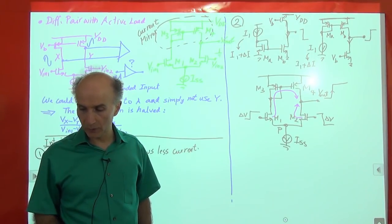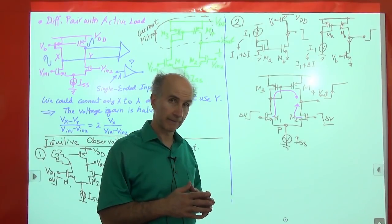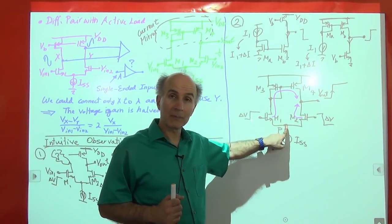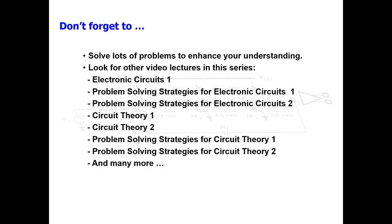In the next lecture, we will begin to analyze the small signal behavior of the circuit. In particular, we will see that unfortunately we cannot assume that node P is AC ground — meaning the circuit doesn't have a simple line of symmetry as before.